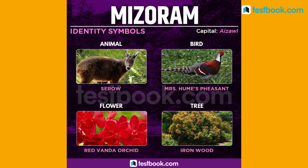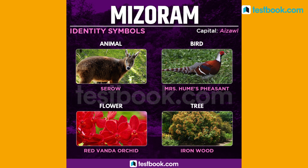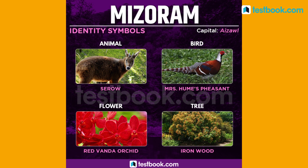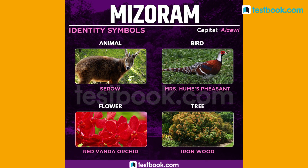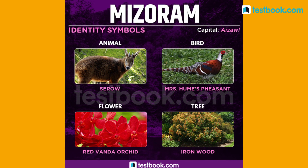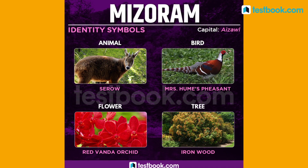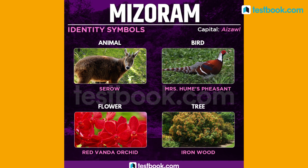Serow is the state animal for Mizoram, state bird is Mrs. Hume's Pheasant, state flower is Red Vanda Orchid and state tree is Ironwood.